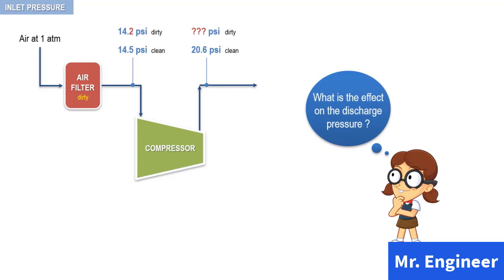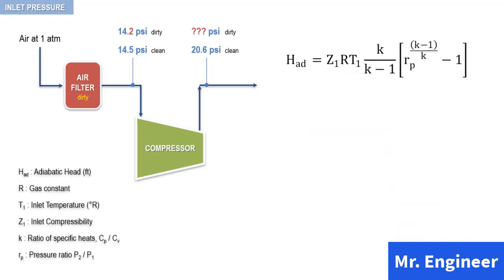For a centrifugal compressor, discharge pressure is related to the adiabatic head according to the following equation. Here, Z1 is the gas inlet compressibility, R is the gas constant, T1 the gas inlet temperature, K is the ratio of specific heats, and RP is the pressure ratio of the gas — that is, the discharge pressure divided by the inlet pressure. In this equation, subscript 1 refers to the compressor inlet, or the compressor suction.